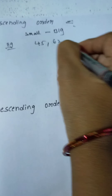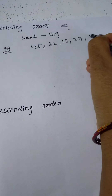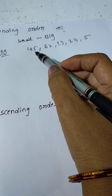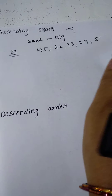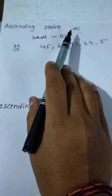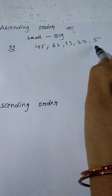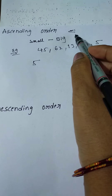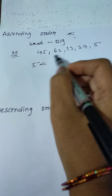Take the numbers 45, 62, 13, 27, and 5. Change into ascending order. First, compare the numbers — which one is the smallest number? 5 is the first smallest number.